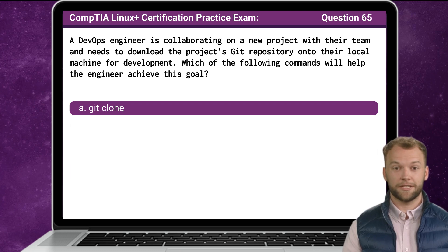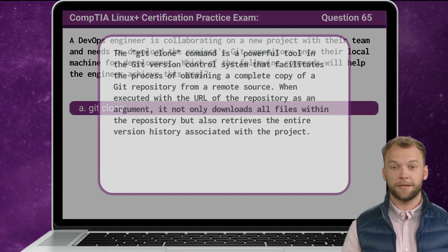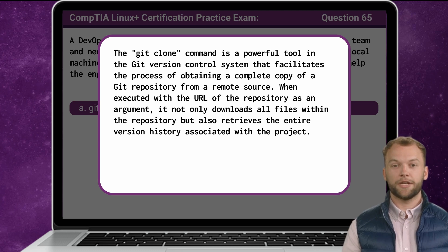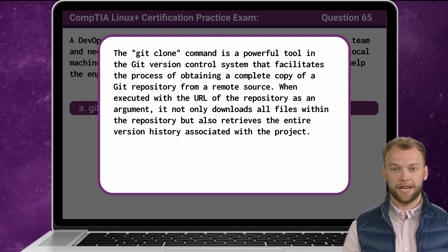The answer is A: git clone. The git clone command is a powerful tool in the Git version control system that facilitates obtaining a complete copy of a Git repository from a remote source. When executed with the URL of the repository as an argument, it not only downloads all files within the repository, but also retrieves the entire version history associated with the project.